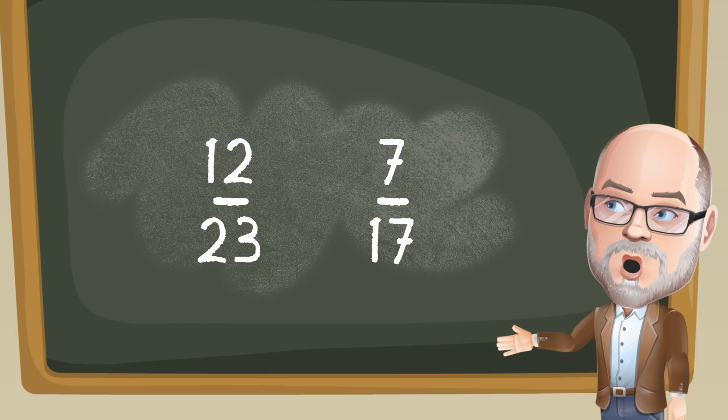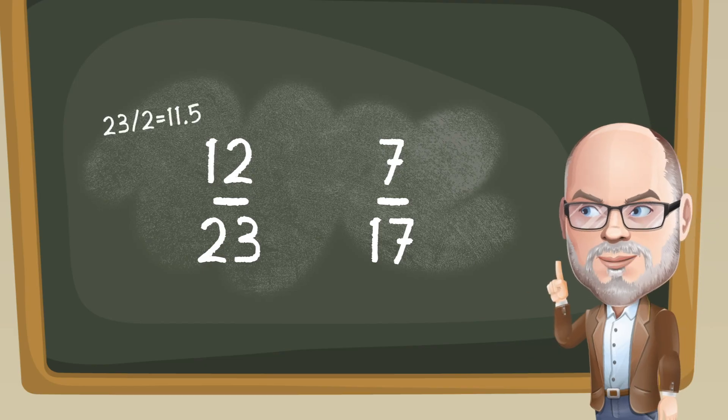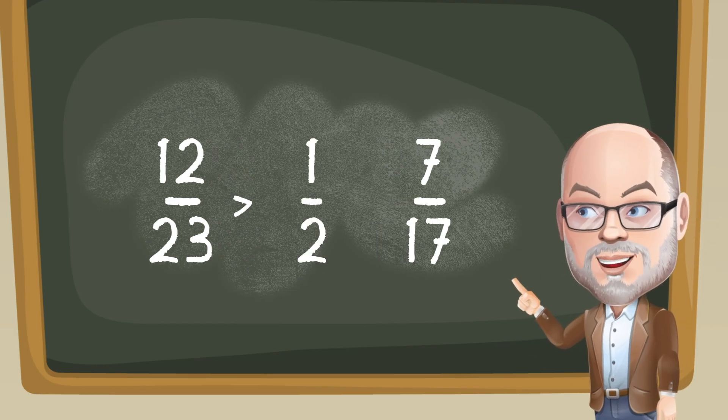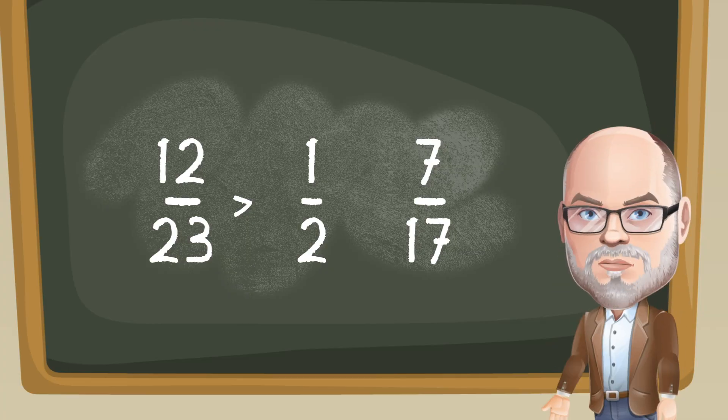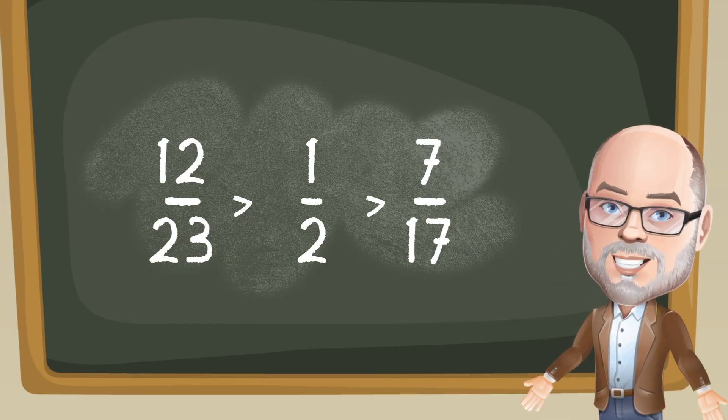But 12 is more than half of 23, meaning that 12 23rds is more than one-half, and 7 17ths is less than a half. And so that's a great way to compare those fractions.